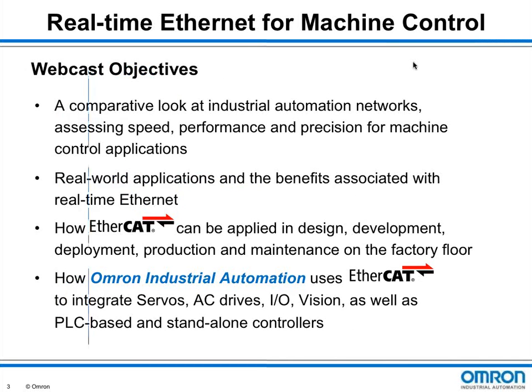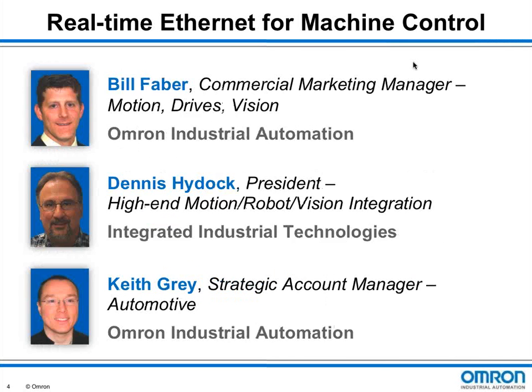This webcast will provide a comparison of industrial automation networks, highlight actual end-use applications of real-time Ethernet, explain how EtherCAT can connect multiple steps in the manufacturing process from design to maintenance, and look at how Omron is using EtherCAT to integrate numerous automation technologies. Joining me are Bill Faber with Omron Industrial Automation's Motion Drives and Vision Business Unit, Dennis Heidock from Integrated Industrial Technologies, and Keith Gray with Omron's Automation Business Unit. At the end of the webcast, our panel will answer your questions.